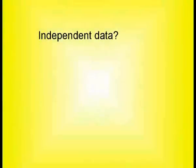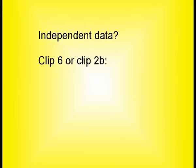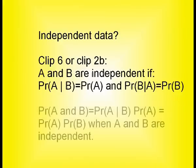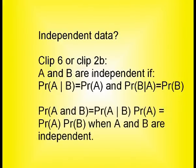If you can assume that you can gather independent data repeatably, that means that you will always be able to get wiser. Now, what do I mean by independent data? As you may remember from Clip 6, or the Mathematical Foundation presented in Clip 2b, the independence between A and B is when the probability of A given B is the probability of A, and the same vice versa. Or phrased a little differently, the probability of A and B is the probability of A times the probability of B.